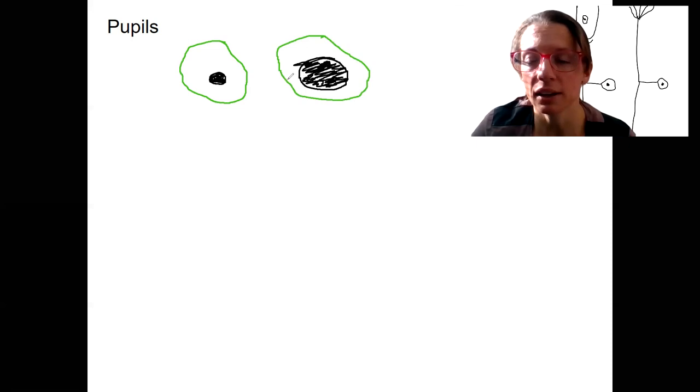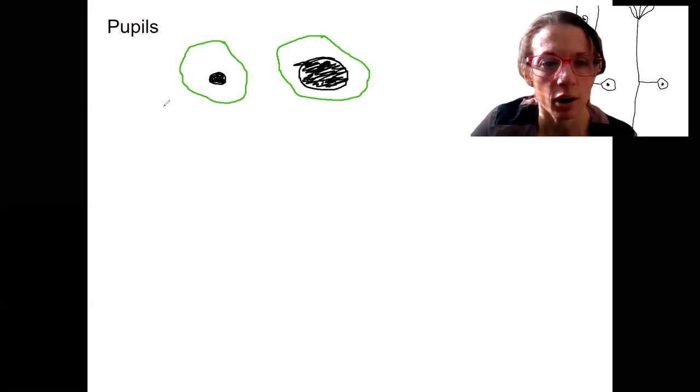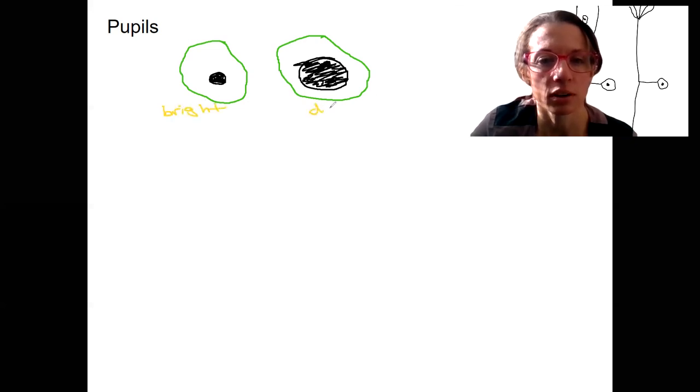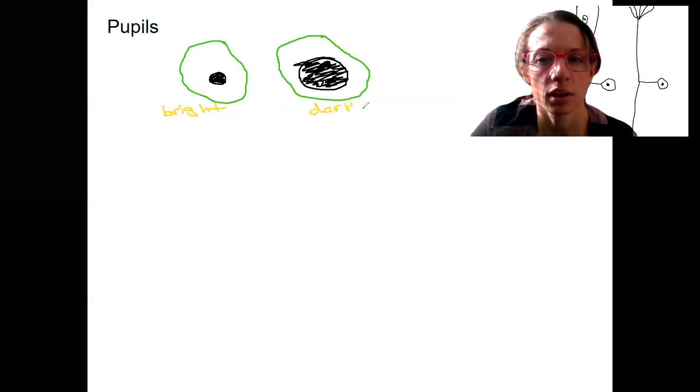Which one of these is in bright light and which one of these is in the dark? Could you figure that out? So with bright illumination, our pupils get smaller. In dark, they get larger to allow for more light to pass in.